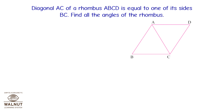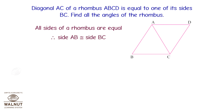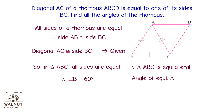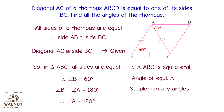Diagonal AC of rhombus ABCD equals one of its sides BC. Find all the angles. All sides of a rhombus are equal, so AB = BC. Since AC = BC is given, in triangle ABC all three sides are equal — triangle ABC is equilateral. Therefore angle B = 60°. Since angle B + angle A = 180° (supplementary), angle A = 120°.